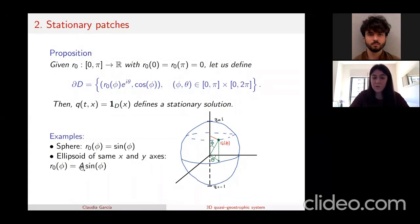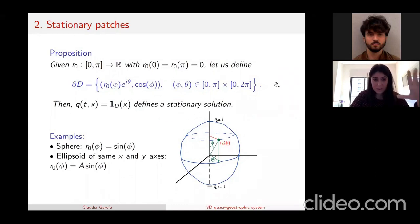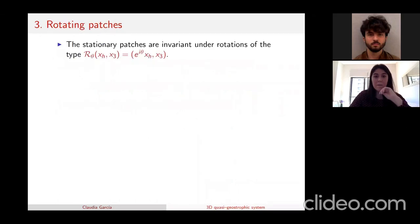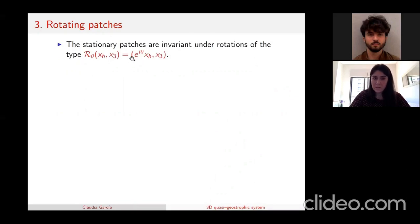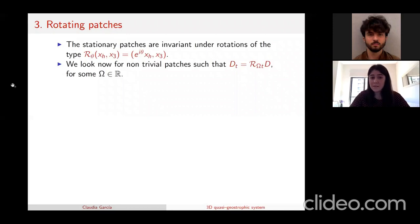So we have plenty of stationary solutions. The main property of these stationary patches is that they are invariant under rotations in the horizontal variable, keeping the third variable fixed. They have this property because they are revolution shapes around the vertical axis — invariant under every such rotation. Our goal is then to find non-trivial patches, in the sense that they are not stationary but their evolution is a rotation at constant angular velocity omega.